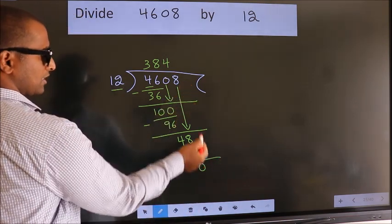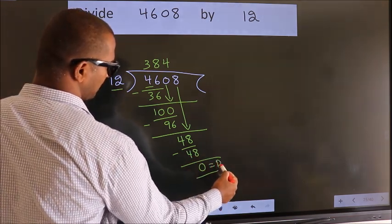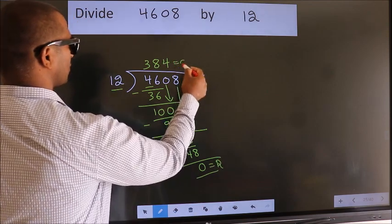No more numbers to bring down, so we stop here. This is our remainder. This is our quotient.